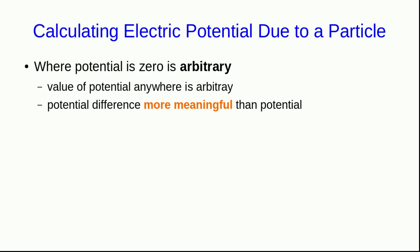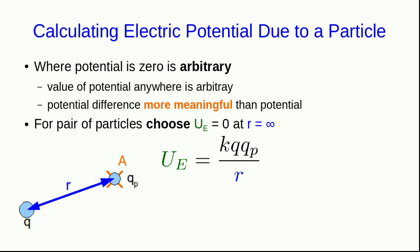However, we often have a convention, as we've seen. For particles, we choose that the electric potential energy is zero when they're at infinite separation, and so that will also say that their electric potential will be zero at infinite separation by this convention.